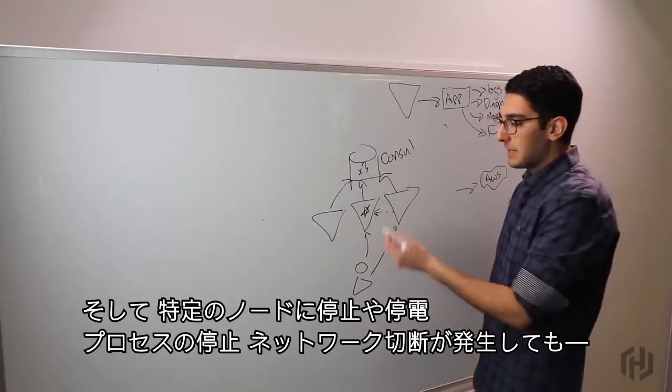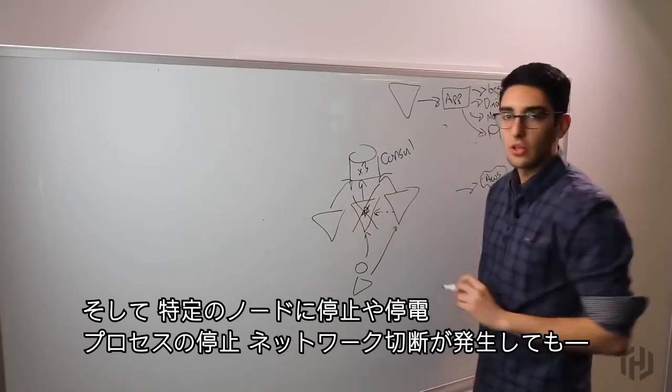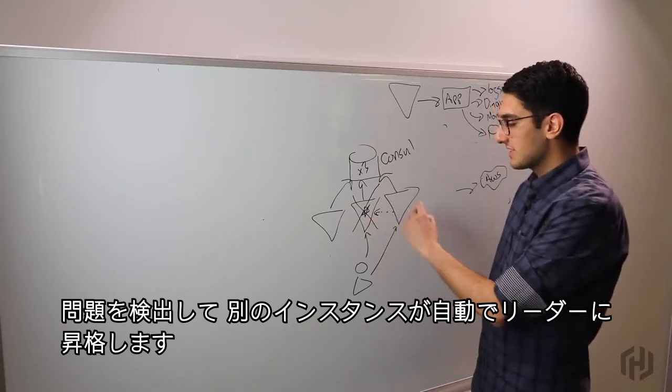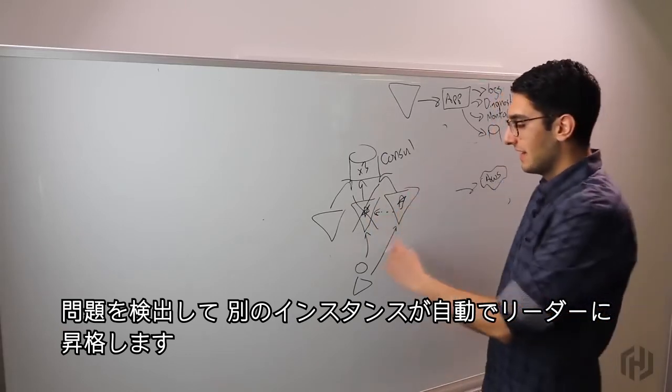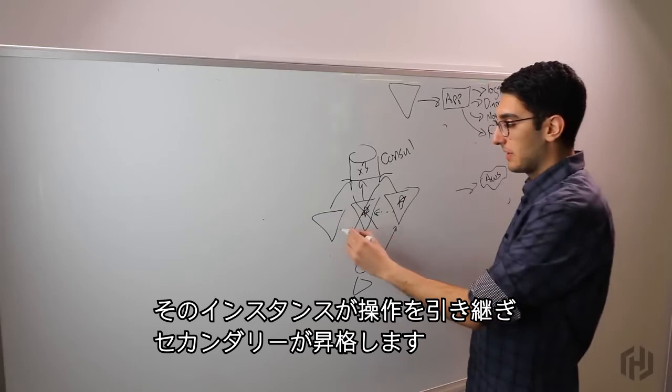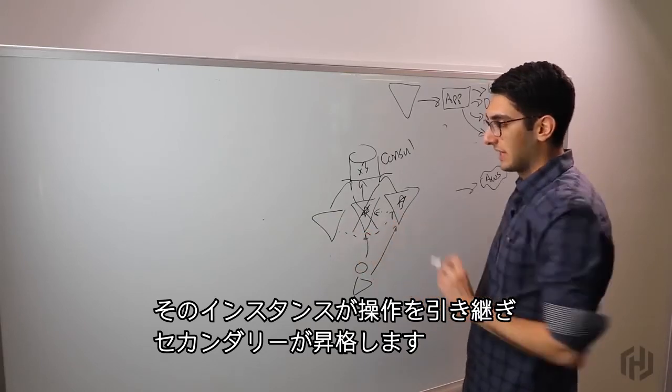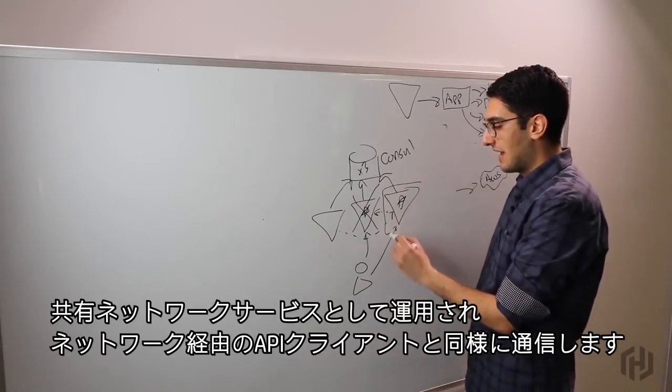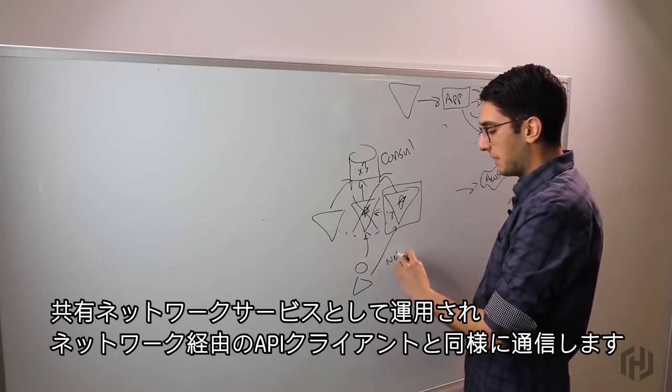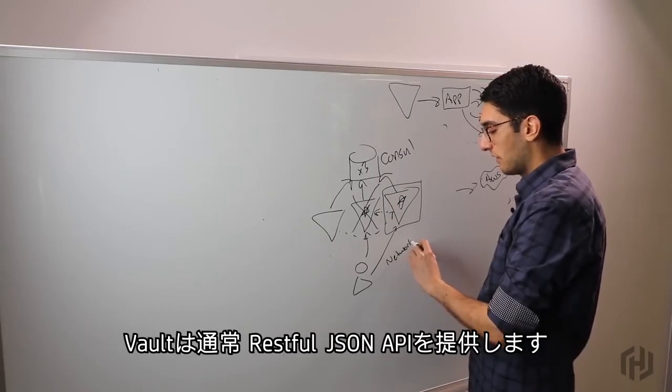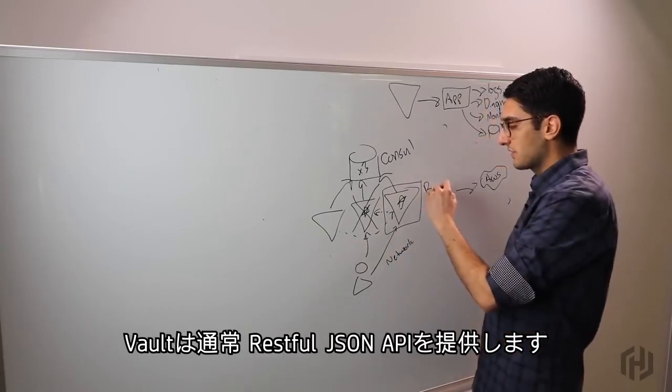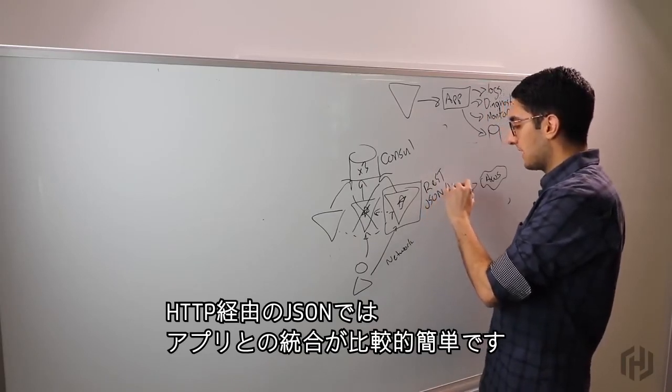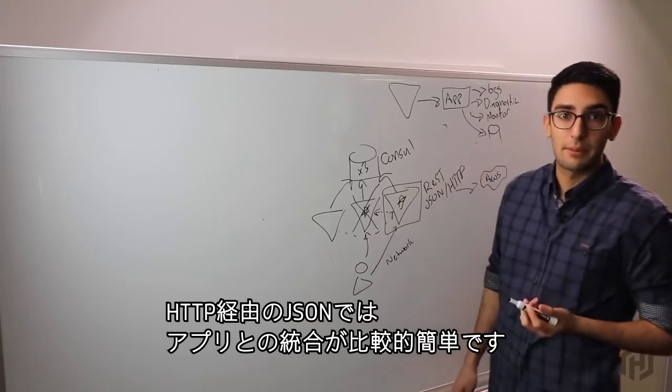In this way, if any particular node dies, power loss, process crashes, maybe network connectivity is an issue, we will detect this and promote a new one to leader automatically. And this instance takes over active operation and our other secondaries will begin to promote. This is what Vault looks like at a high level. It operates as a shared network service. And we're talking to it just as an API client over the network. What Vault typically exposes is a RESTful JSON API. So it's JSON over HTTP, making it relatively easy to actually integrate with our applications.